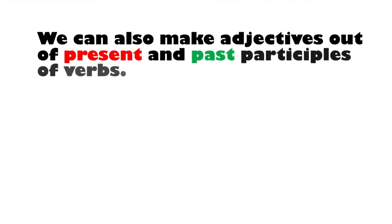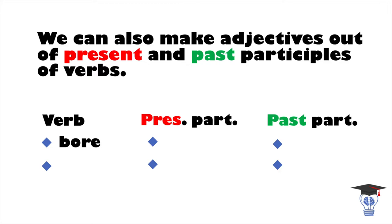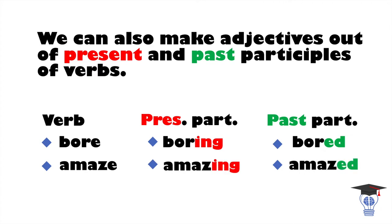We can also make adjectives out of present and past participles of verbs. For example, the verb 'bore': present participle 'boring', past participle 'bored'. Or the verb 'amaze': present participle 'amazing', past participle 'amazed'.